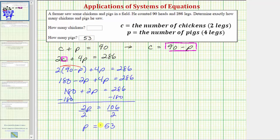To determine the number of chickens, we substitute 53 for p in our equation here, c equals 90 minus p. So c must equal 90 minus 53, and therefore c is equal to 37.